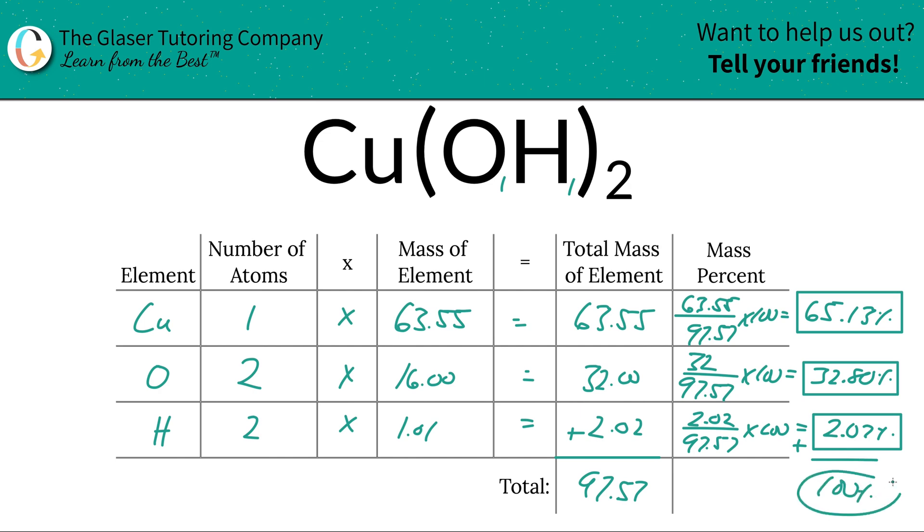Anyway, this should add up to 100, but don't worry, you've got 100 on this question, so that should make you feel better. That's all there is to it. Thanks for tuning in. Now you know how to find the percent composition of each element inside of copper 2 hydroxide. I'll see you in the next one. Take care.